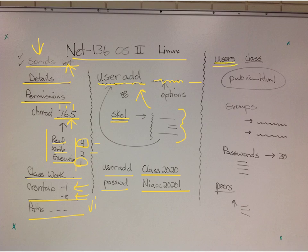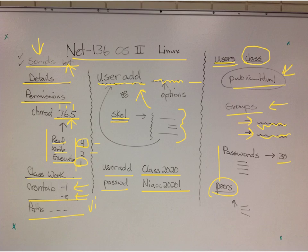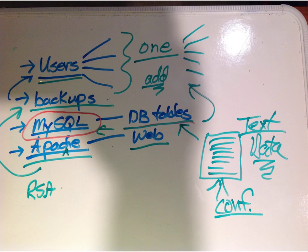For the classwork, you're going to create users — you can use everybody in the class — and they're going to have a public HTML directory so they'll have their own web page. You're going to do some groups, putting different students in different groups with different permissions to access different directories. You'll also need to do password management — how many days before it needs to be changed. You'll use your peers to test the work, and I've got more information in the next day's slides. I suggest you just create one user now; we have until the end of March. Get everything set up for one user, make sure you can do that, then add the rest later.